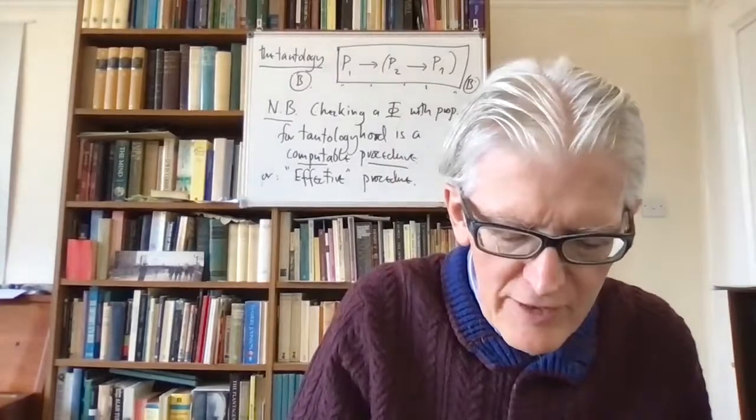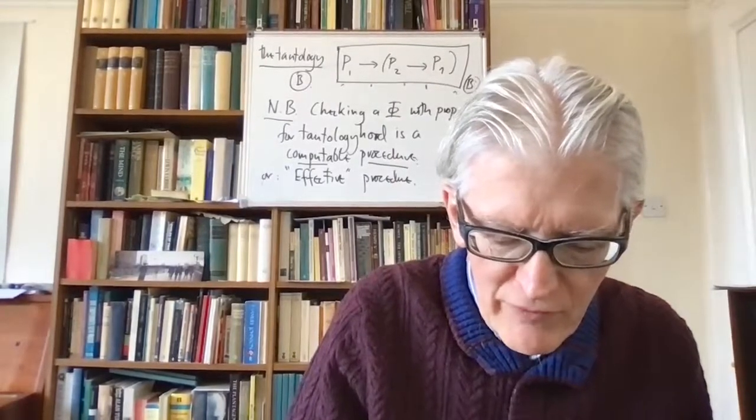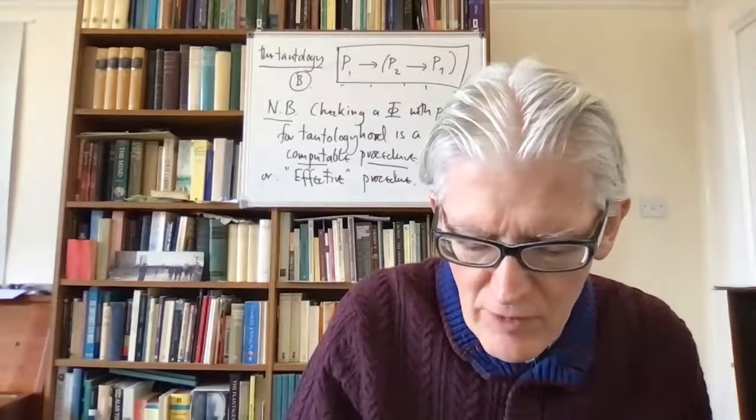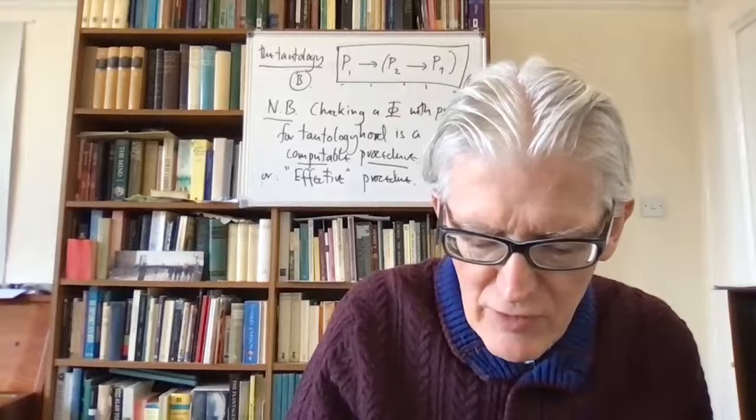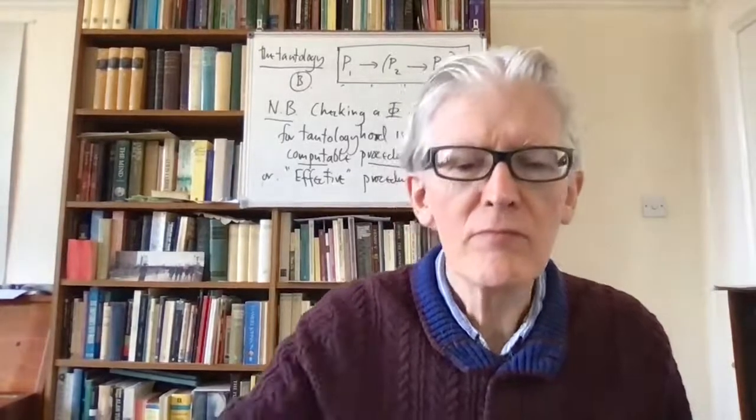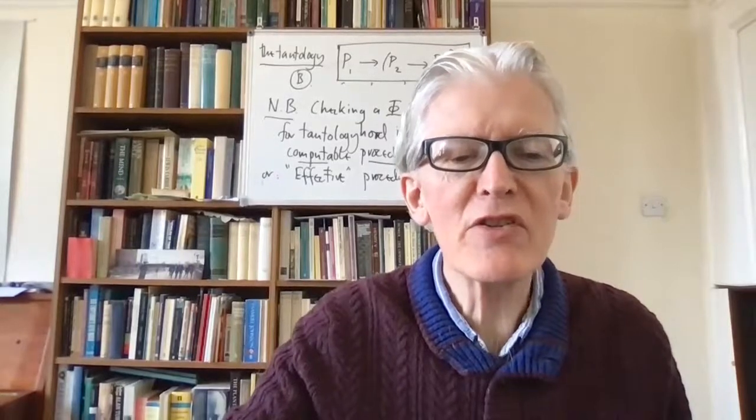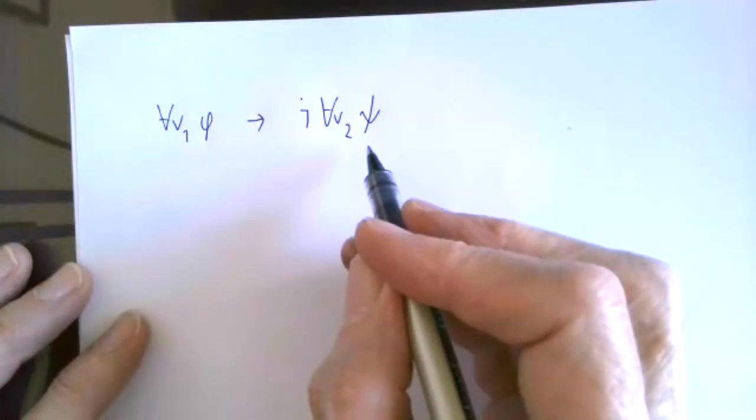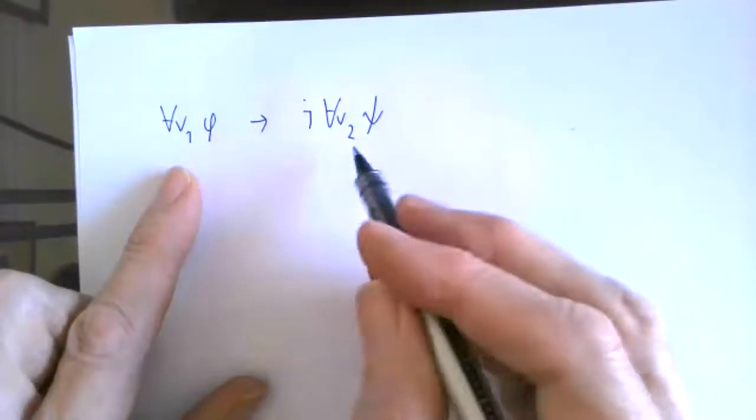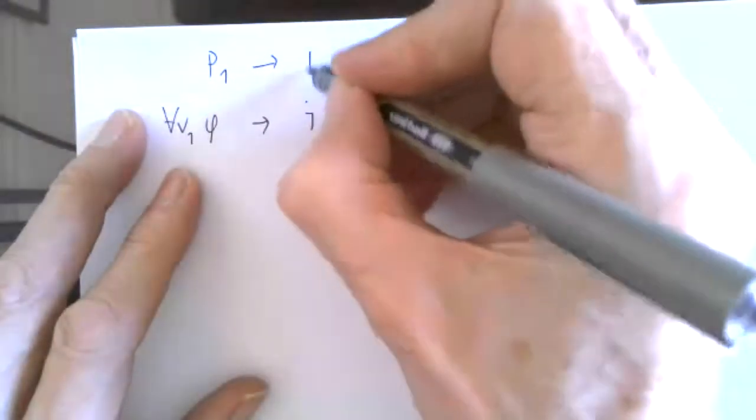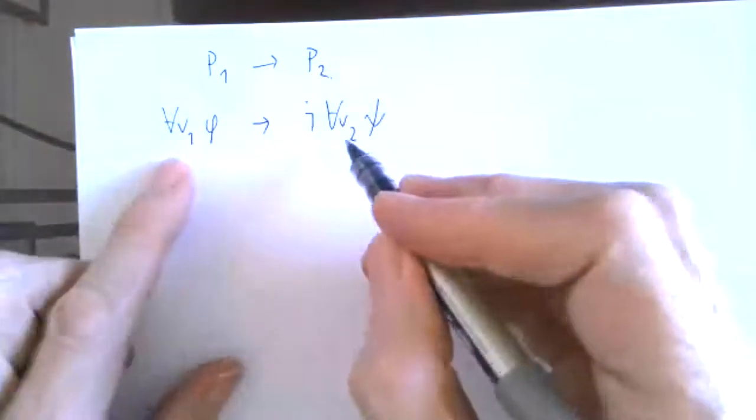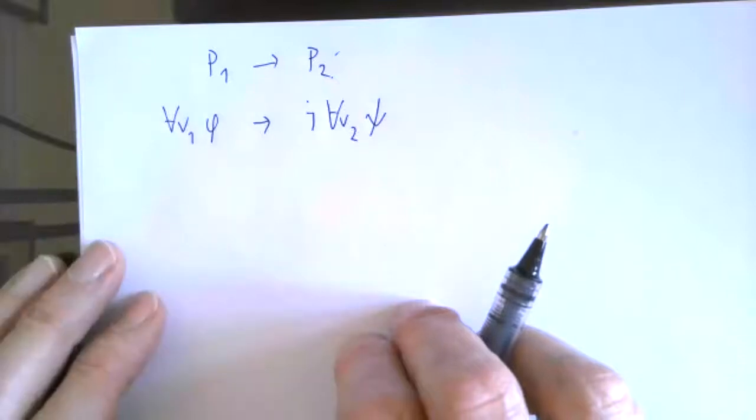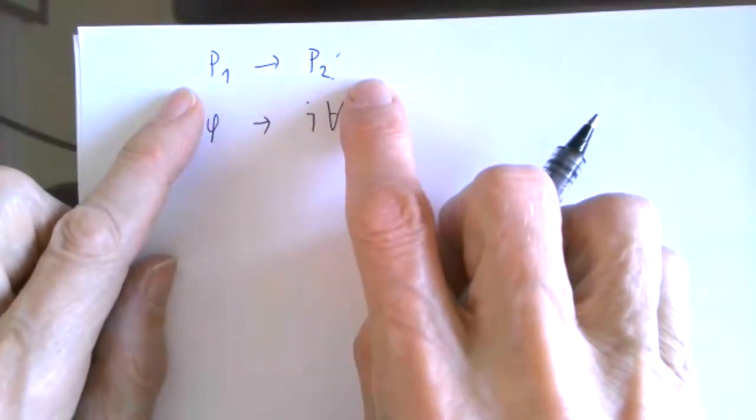Something like this: for all v1 phi arrow, it's not the case that for all v2 psi. This can't be a tautology instance. I could think of this as looking like p1 arrow p2. I can say this is an instance where I put this sub-formula for p1 and this one for p2, but this of course isn't a tautology.